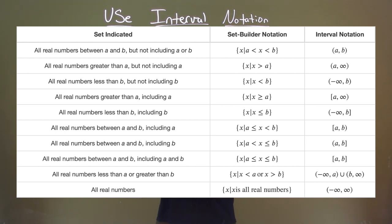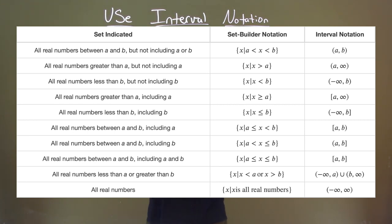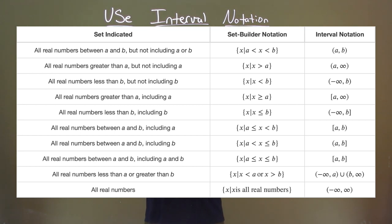All real numbers greater than a including a is very similar to before but it's greater than or equal to, and you have a bracket over the a there. All real numbers less than b including b — same idea, but you have negative infinity with parentheses and a bracket on the b. All real numbers between a and b including a: x such that a is less than or equal to x which is less than b, and you have a bracket on the a but a parenthesis on the b. All real numbers between a and b including b: x such that a is less than x which is less than or equal to b, with parenthesis a comma b bracket for b.